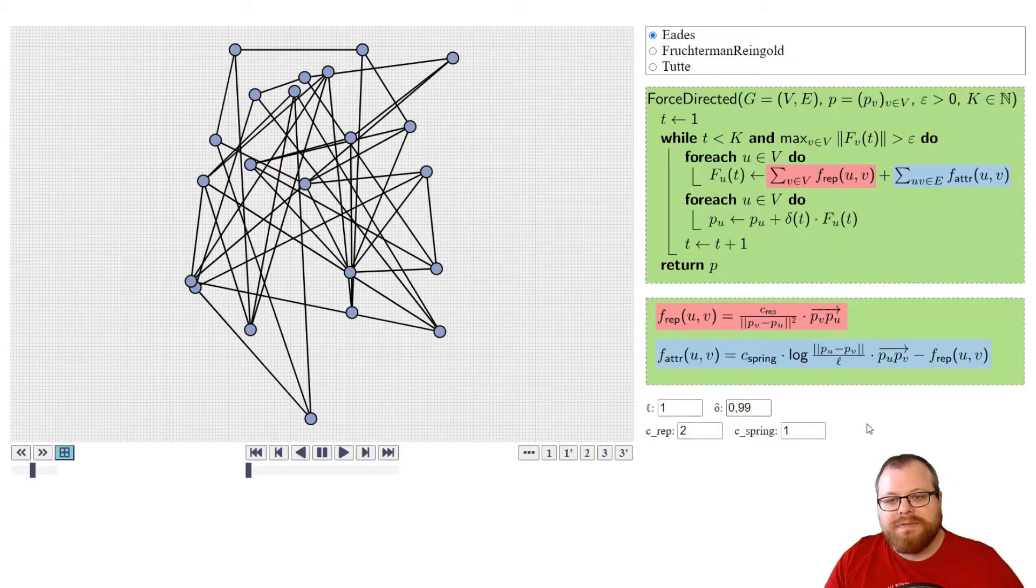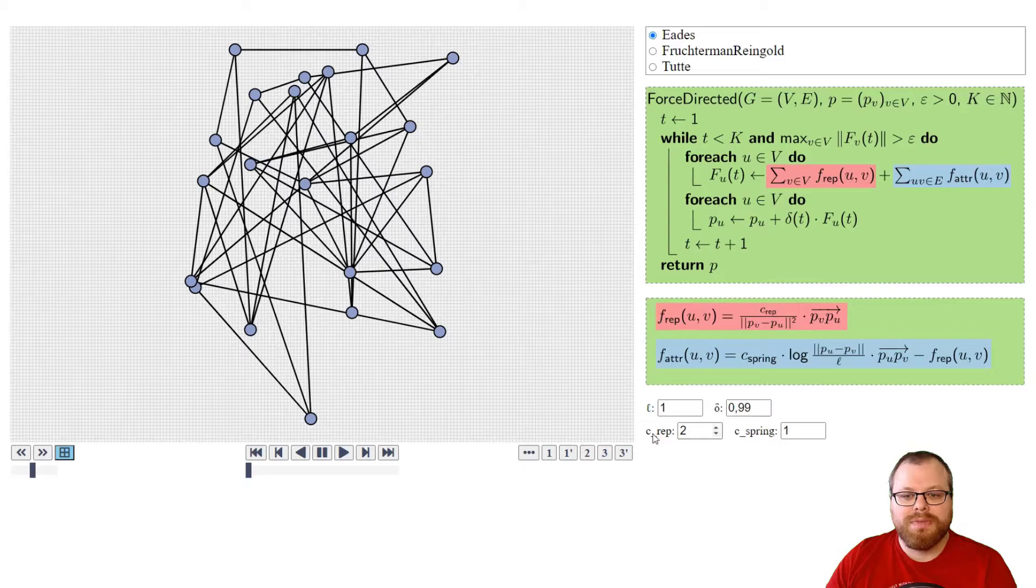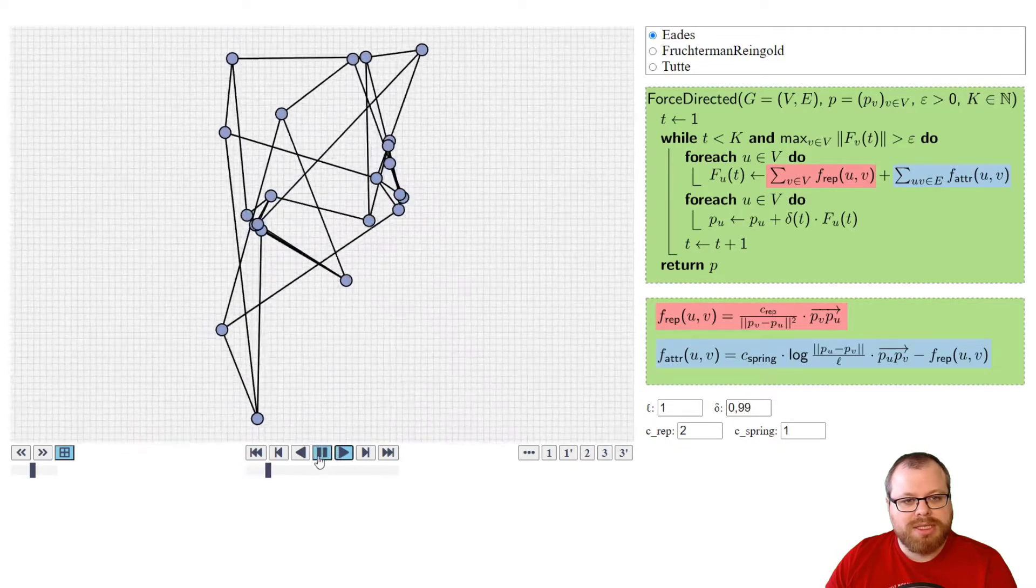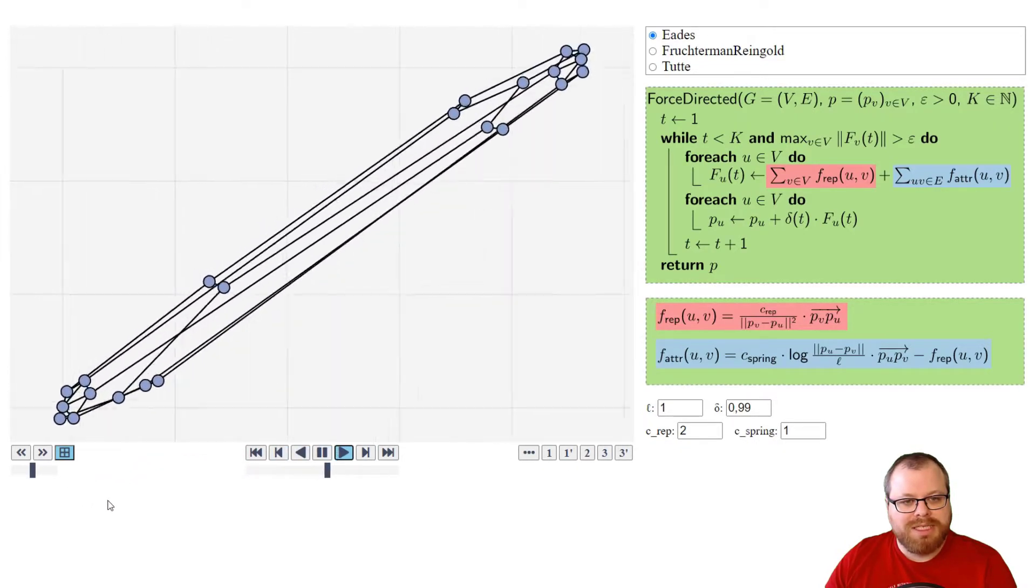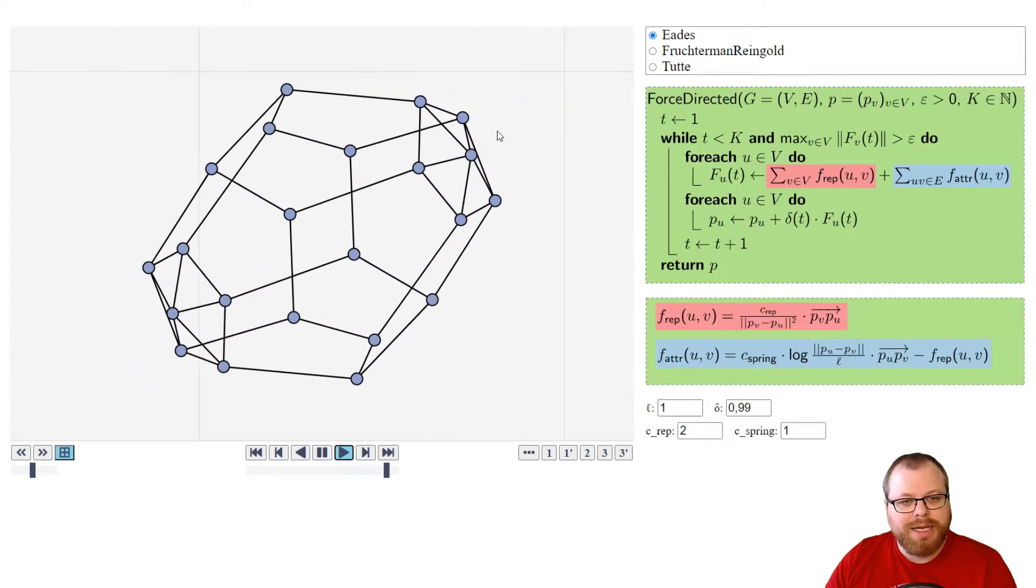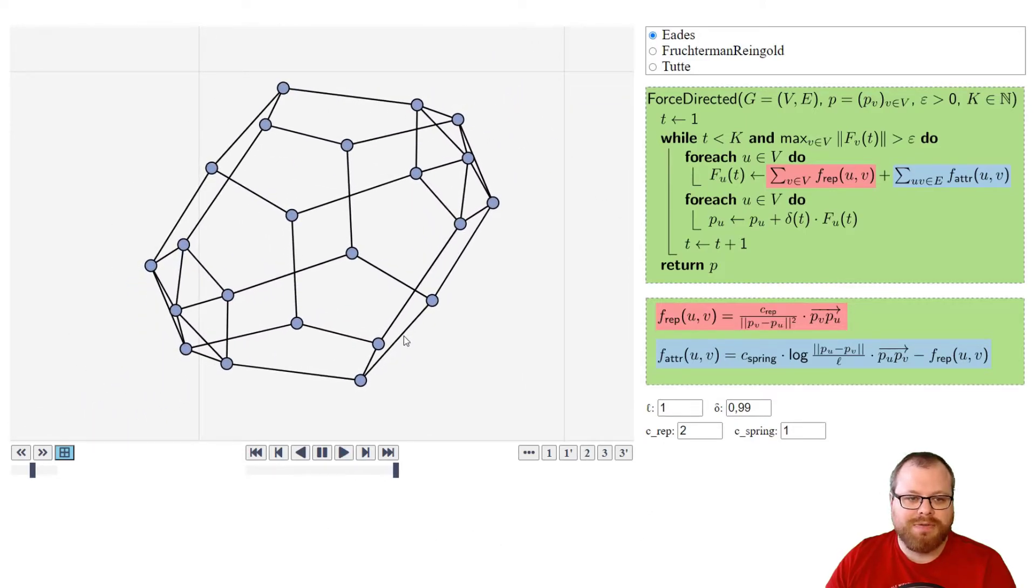And here I have a cooling factor, so that means that at every step the cooling factor gets multiplied with this. So in the beginning we have a 1, then 0.99, then 0.99 to the 2, and so on. Let's just try to run this, and then we see that after a while we get a quite nice layout of this graph.